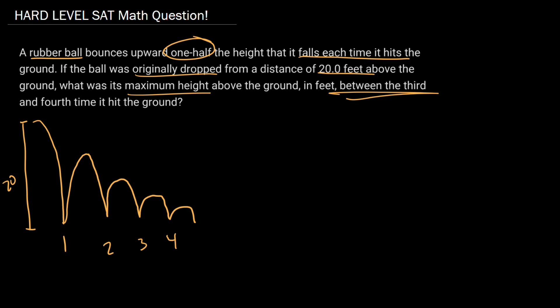We know that it bounces up half the height each time, so that first bounce is 10, the second is 5, the third is 2.5, and this last jump here will be 1.25. So between the third and the fourth jump — that's pretty easy, just match it up — the answer would be 2.5 feet.